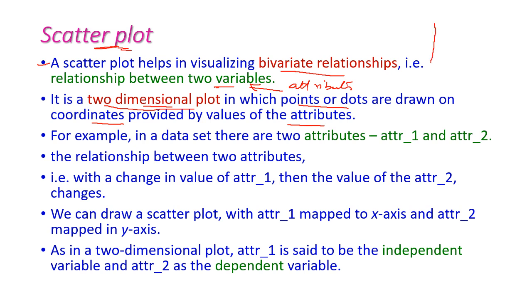The two-dimensional plot has attribute 1 on one axis and attribute 2 on the other axis, with points plotted accordingly. If there is a change in attribute 1, then the attribute 2 value should also change — meaning attribute 1 and attribute 2 are related to each other. Here attribute 2 is the dependent variable, meaning if the value of attribute 1 changes, then the value of attribute 2 should also change.